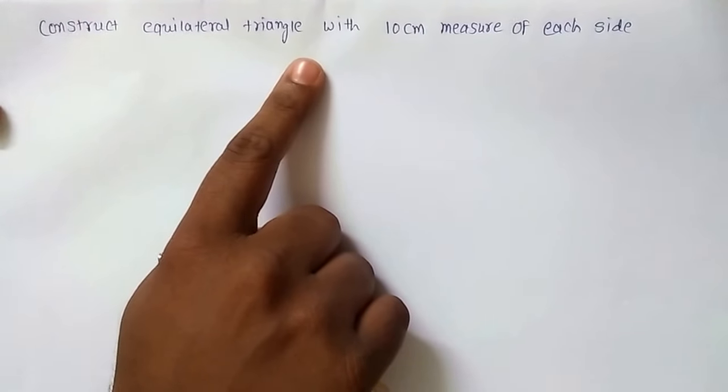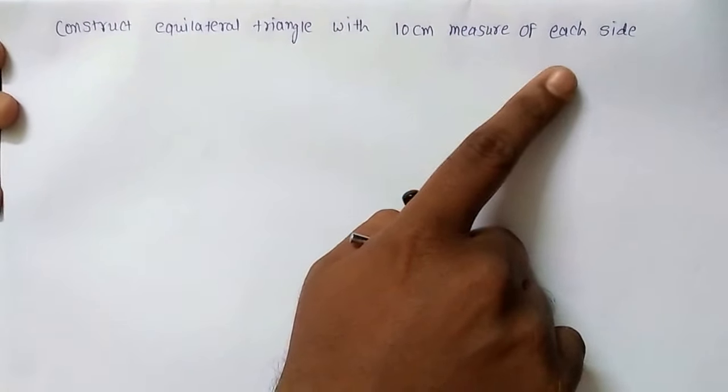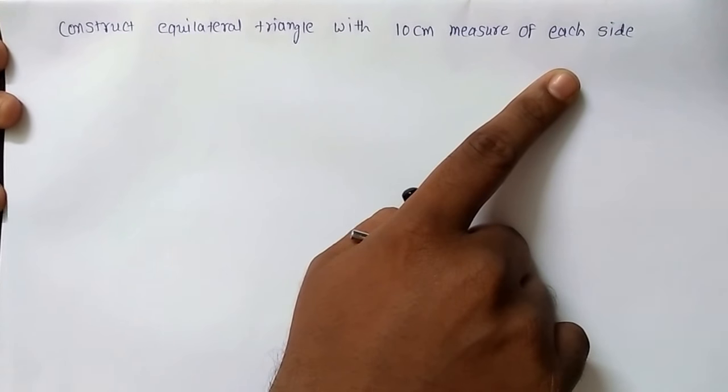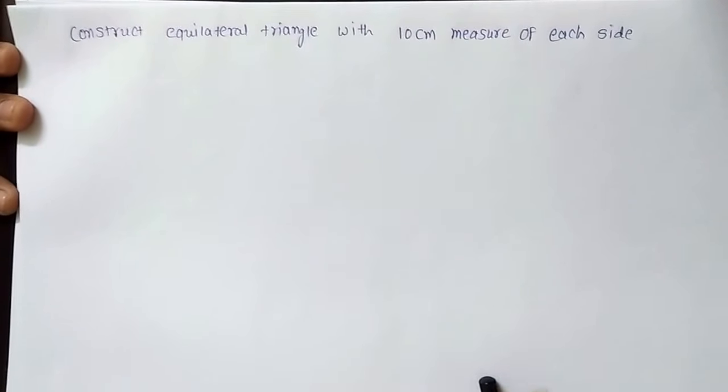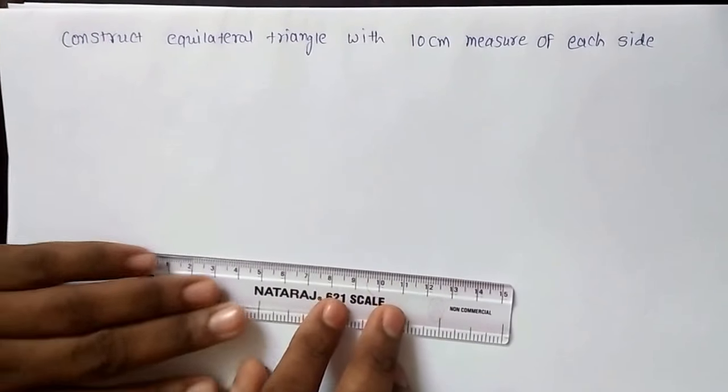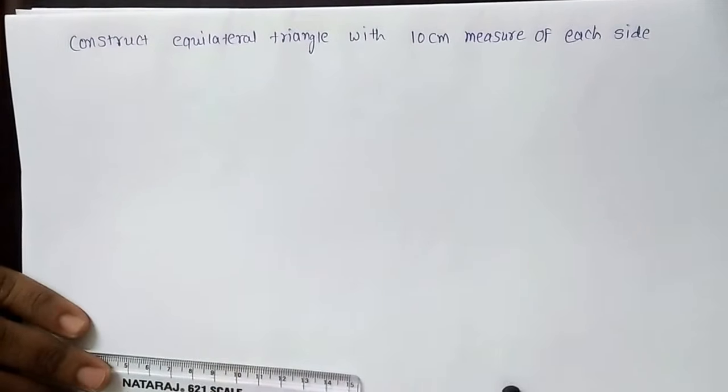Let us see, construct equilateral triangle with 10 cm measure of each side. So we have to take all the three sides congruent and which would be having measure 10 cm. For that first of all I will draw the base of the triangle with 10 cm measure. Let us see. I will draw it.